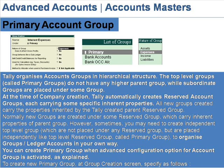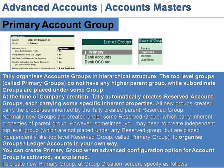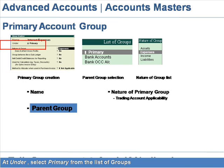You can create a primary group when the advanced configuration option for account groups is activated. To create a primary group at the group creation screen, specify as follows: at Name, enter the name of the new primary group to be created; at Under, select Primary from the list of groups.